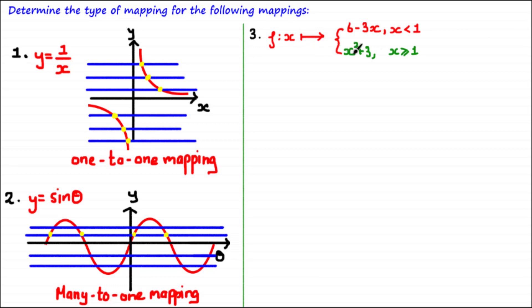Here we have what's called a piecewise mapping, which gives us the equation 6 − 3x for all values of x strictly less than 1, and gives us the equation x² + 3 for all values of x greater than or equal to 1.